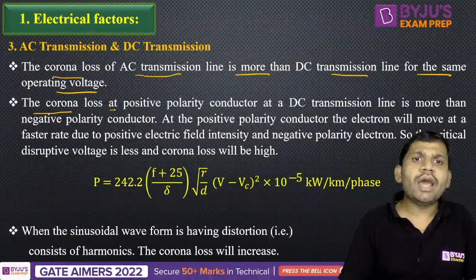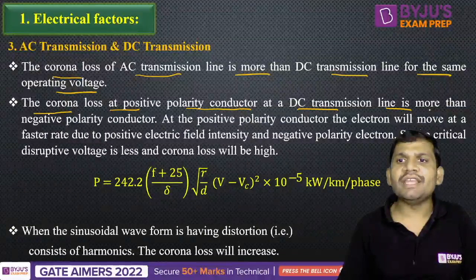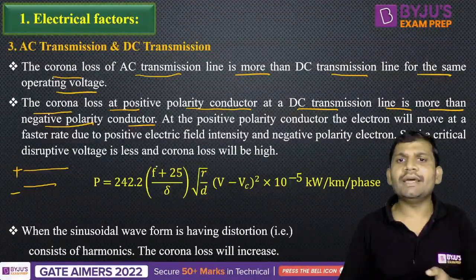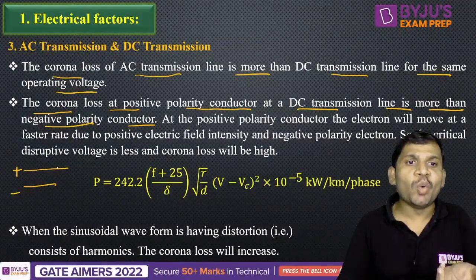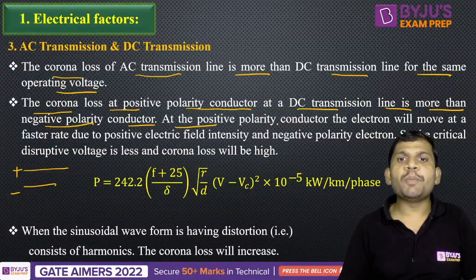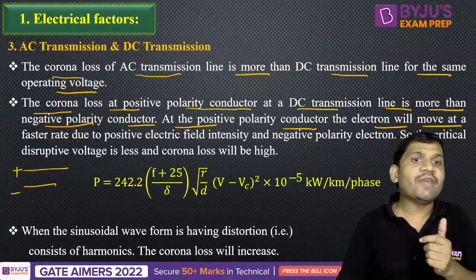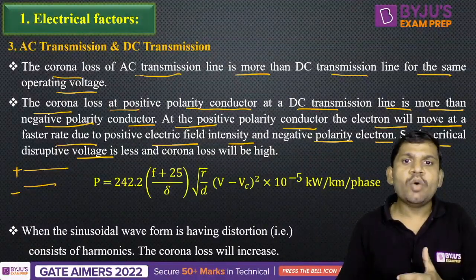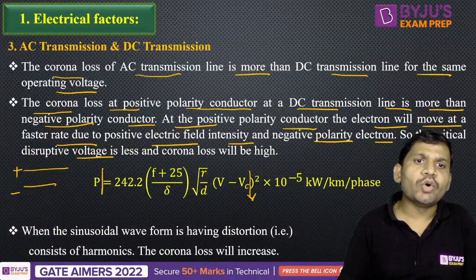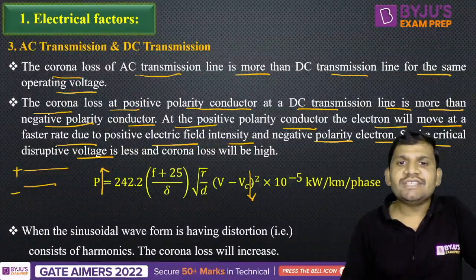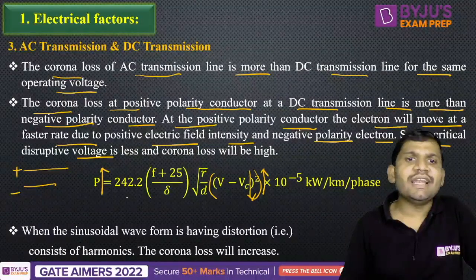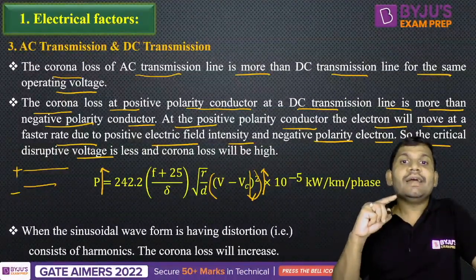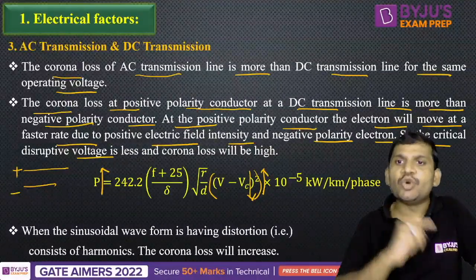One more point to remember: the corona loss at positive polarity of a conductor in a DC transmission line is more than at the negative polarity conductor. In a DC transmission, there is a positive conductor and a negative conductor. At the positive conductor, the corona loss is more because the electron moves at a faster rate due to the positive electric field intensity, so the critical disruptive voltage is less. When the critical disruptive voltage is less, the corona loss is high — if Vc is reduced, V minus Vc increases, and power loss increases.